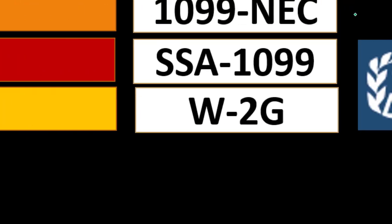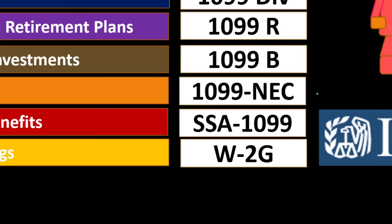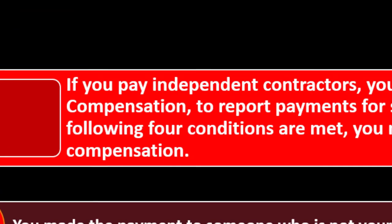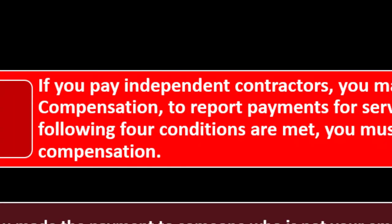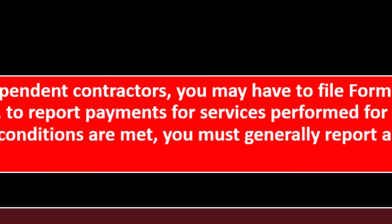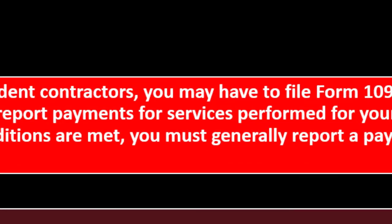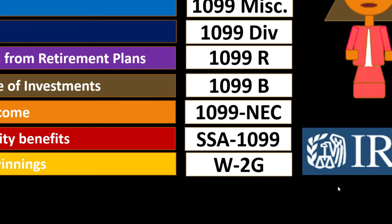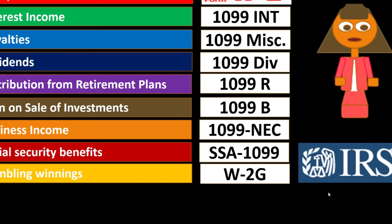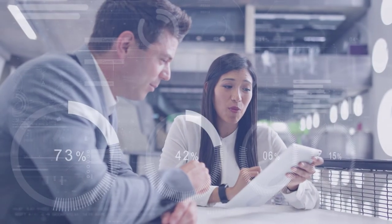Gambling winnings may be reported on a W-2G — so if you went to Las Vegas and won, you might receive a W-2G. If you pay independent contractors, you may have to file a 1099-NEC — non-employee compensation — to report payments for services performed for your trade or business if certain conditions are met. These are the more common types of income forms, and they will drive your data input and can potentially be automated with the right software.